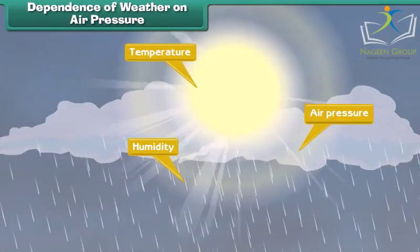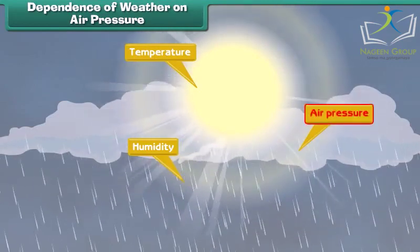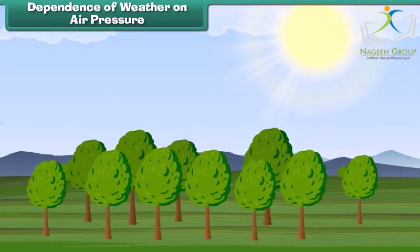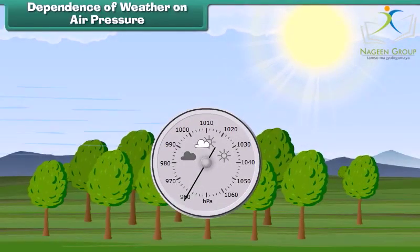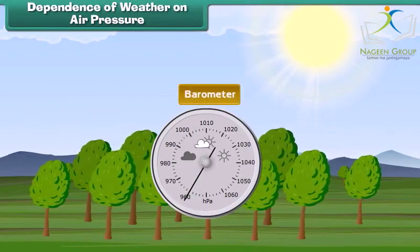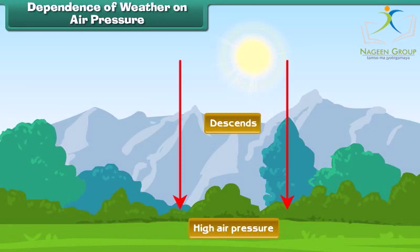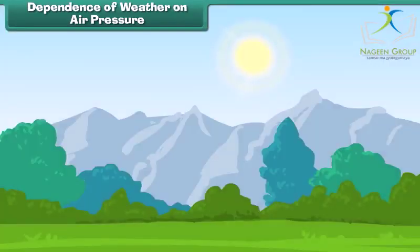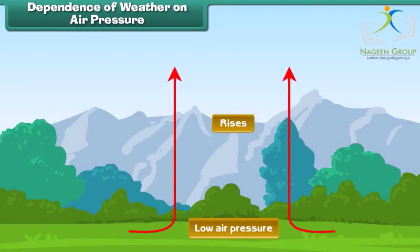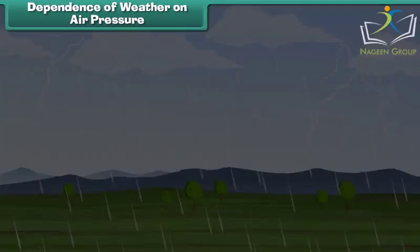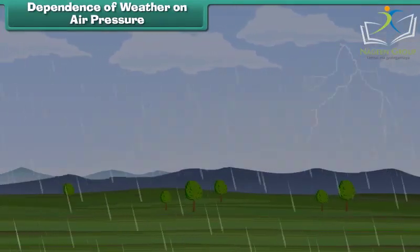What about air pressure? You might not realize it, but the air around you actually has a weight. We measure air pressure with a device called the barometer. In areas of high pressure, the air slowly descends to the earth's surface, and high pressure areas are associated with clear sunny days. In areas of low pressure, air rises up into the atmosphere, and low pressure areas have high humidity, clouds, rain, and other kinds of precipitation.